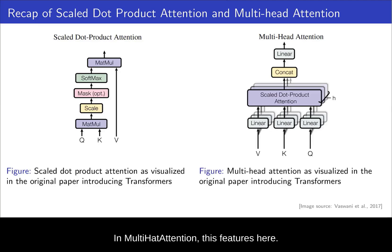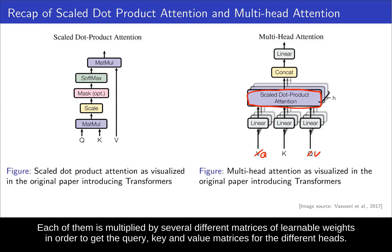And in multi-head attention, this features here. Now in multi-head attention, we have multiple heads. And so we take the inputs, actually this figure is from the original paper. Let's make this consistent to not be confusing. So we have these inputs, queries, keys and values. Each of them is multiplied by several different matrices of learnable weights in order to get the query, key and value matrices for the different heads.